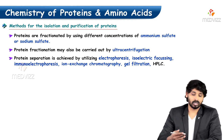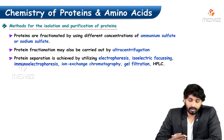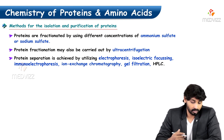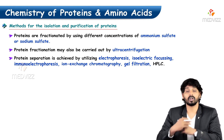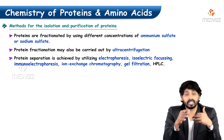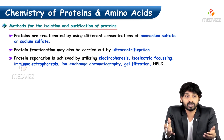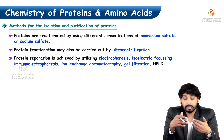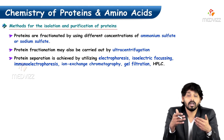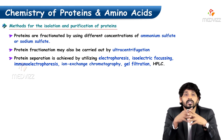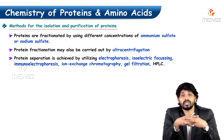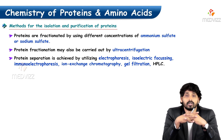Methods useful in the isolation and purification of proteins include fractionation using different concentrations of ammonium sulfate or sodium sulfate. Proteins can also be fractionated by ultracentrifugation, immuno-electrophoresis, ion exchange chromatography, and gel filtration — all of these are methods useful in isolation and purification of proteins.